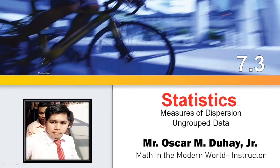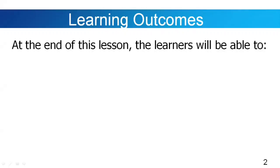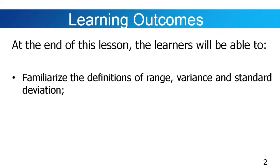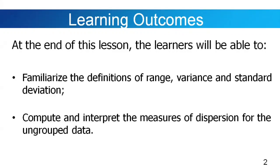So before we go to our lesson, let's read first our learning outcomes. At the end of this lesson, the learners will be able to: first, familiarize the definitions of range, variance, and standard deviation, and compute and interpret the measures of dispersion for the ungrouped data.